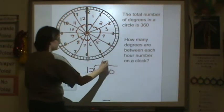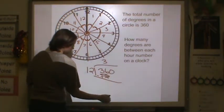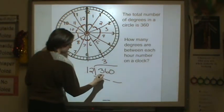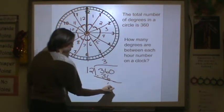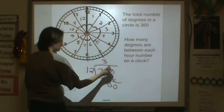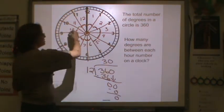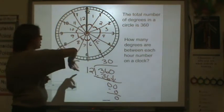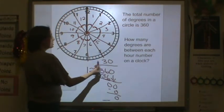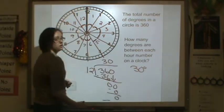How many 12s are in 36? 3. Multiply, subtract, bring down. How many 12s are there in 0? 0. So there's 30 degrees between all of these sections, which makes sense because 30 times 12 is 360. So our answer is 30 degrees.